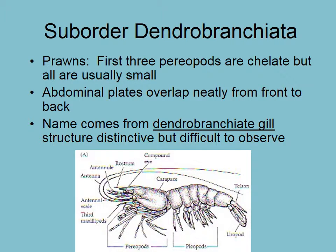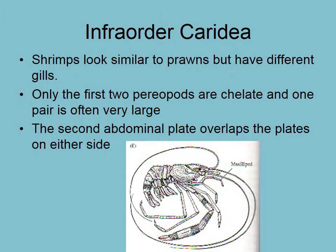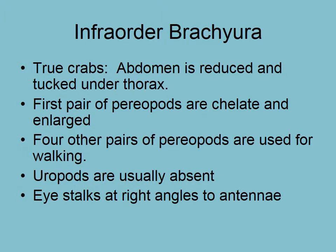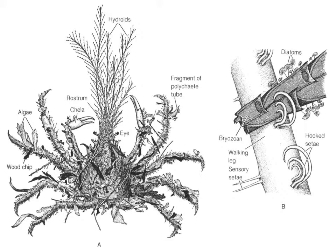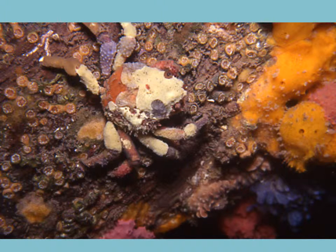Dendrobranchiata are prawns. Caridea are shrimps that have two chelate first appendages. Here's an interesting decorator crab — you can see the two chelate first appendages, and it has little hooks that it attaches things onto its shell for camouflage. They might even attach sponges, which taste bad, onto their shell for protection.